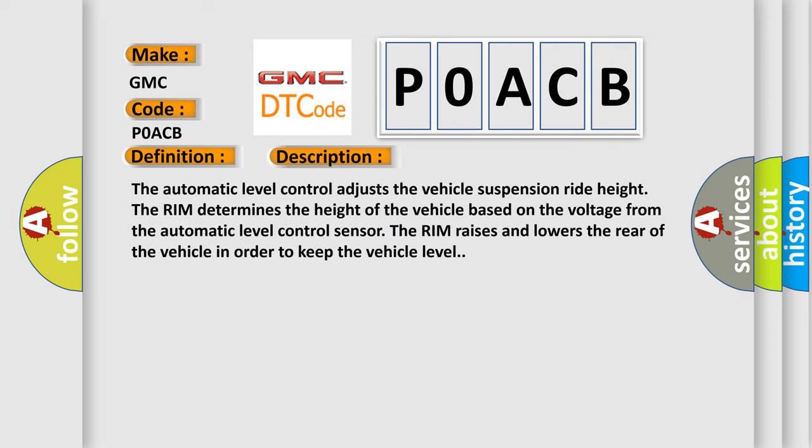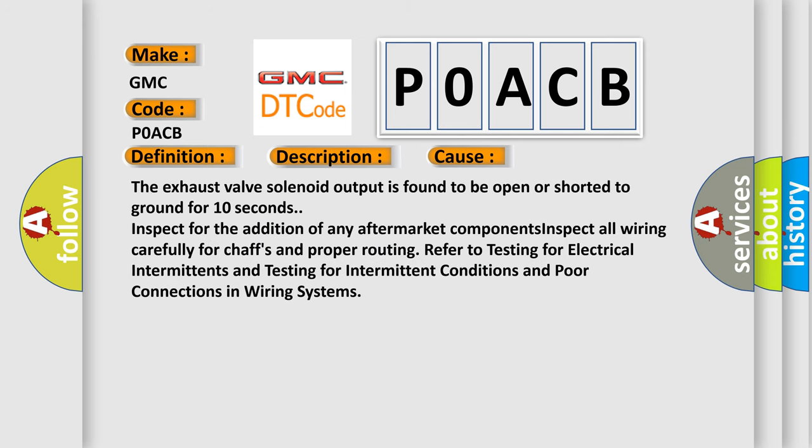The automatic level control adjusts the vehicle suspension ride height. The system determines the height of the vehicle based on the voltage from the automatic level control sensor, raising and lowering the rear of the vehicle in order to keep it level. This diagnostic error occurs most often when the exhaust valve solenoid output is found to be open or shorted to ground for 10 seconds. Inspect for any aftermarket components, inspect all wiring carefully for chaffs and proper routing, and refer to testing for electrical intermittence and poor connections in wiring systems.